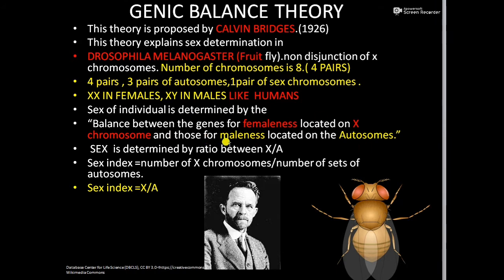The sex is determined by the ratio of X chromosomes to the sets of autosomes, and this ratio is known as the sex index. The sex index is expressed by the formula: sex index equals number of X chromosomes divided by number of sets of autosomes, or simply X divided by A.